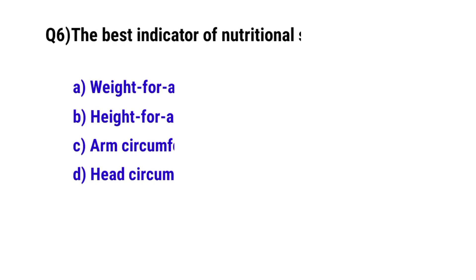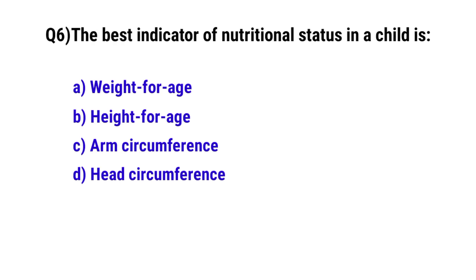Question No. 6. The best indicator of nutritional status in a child is? The correct option is B. Height for age.